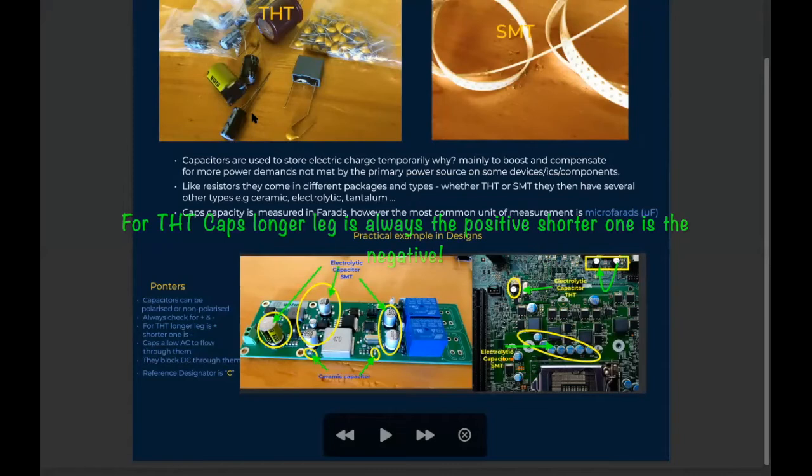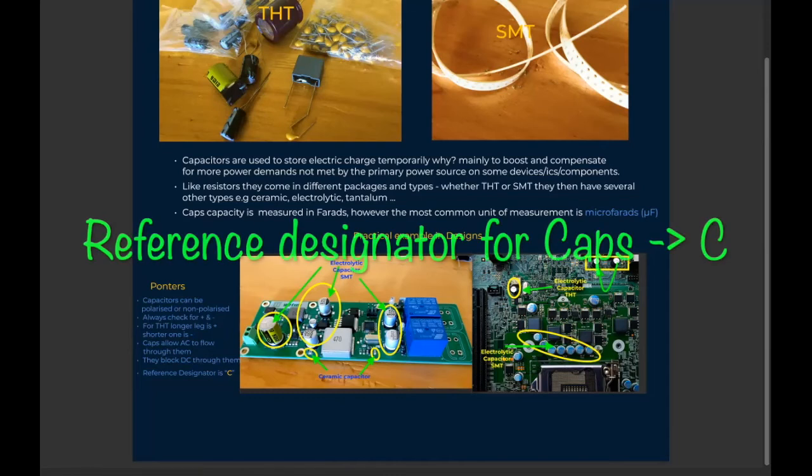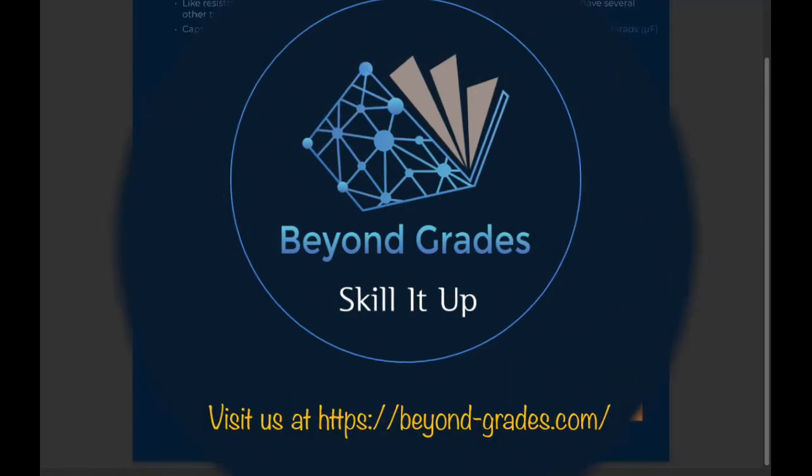A few more pointers: caps do not allow DC current to flow through them, but they do allow AC. Reference designator for this in PCBs is C, so when you see C in any of your PCBs or what people call motherboards, that's a capacitor.